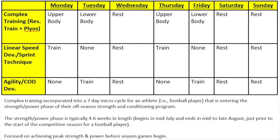They will not work on agility or change of direction on Monday. Tuesday will be a day where lower body complex training is performed. They may do a resistance training exercise like a barbell back squat, followed by a rest period and then a vertical jump. Or maybe they do split squats for the resistance training exercise and then a set of split squat jumps. There will be no speed development work on Tuesday, but they will work on agility and change of direction development.